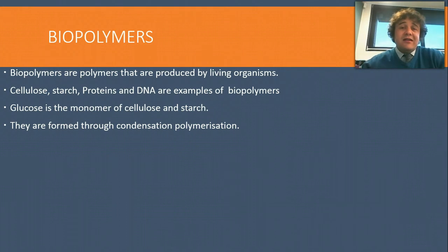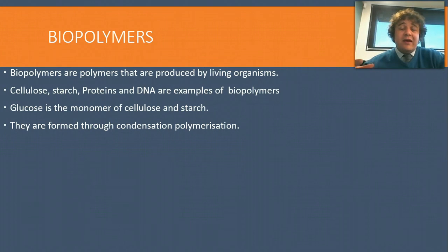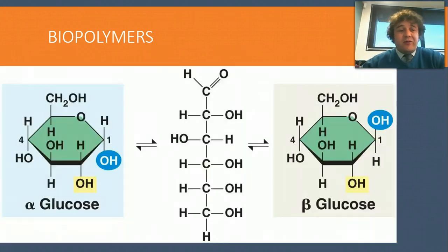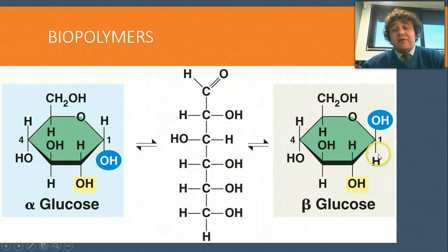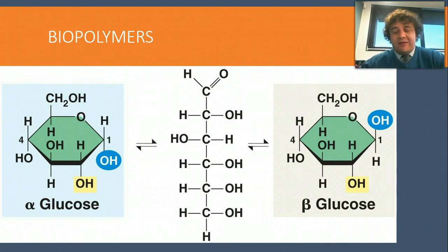Condensation polymerization, as you'll see in the following video, is a polymerization where water is ejected — and that's where the word 'condensation' comes from. Here we have two types of glucose: this is what we call alpha glucose, and this is what we call beta glucose. Essentially they're the same, there's no difference in reactivity — they're just drawn different ways.